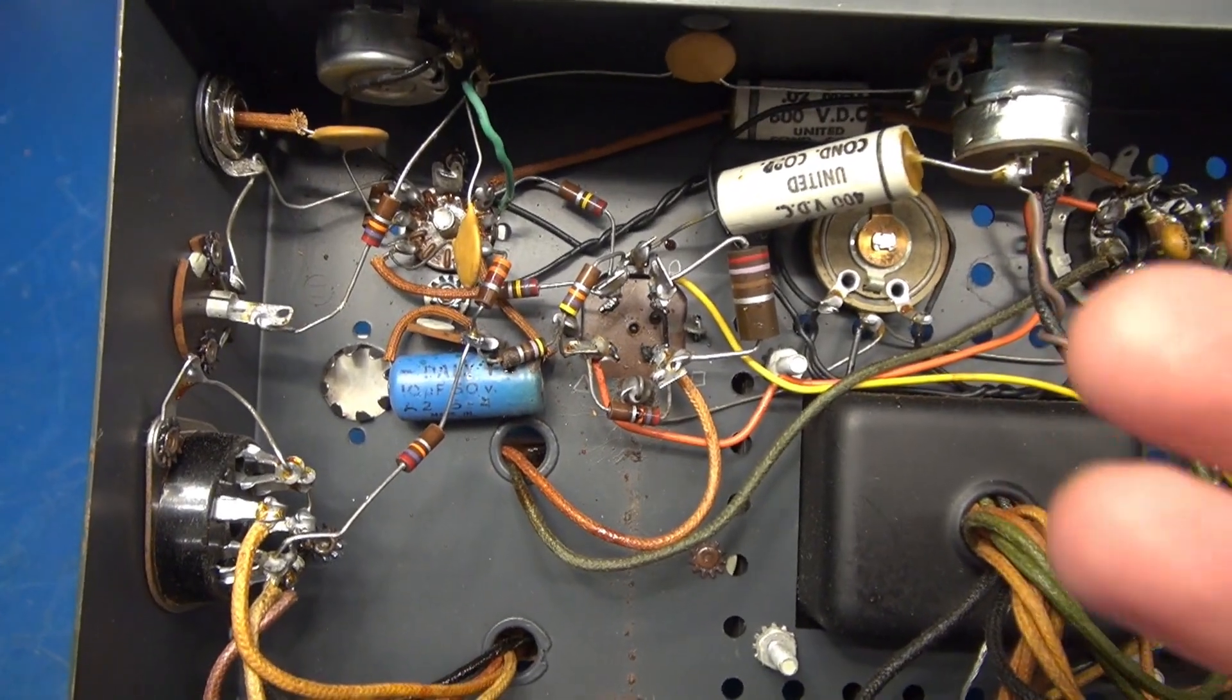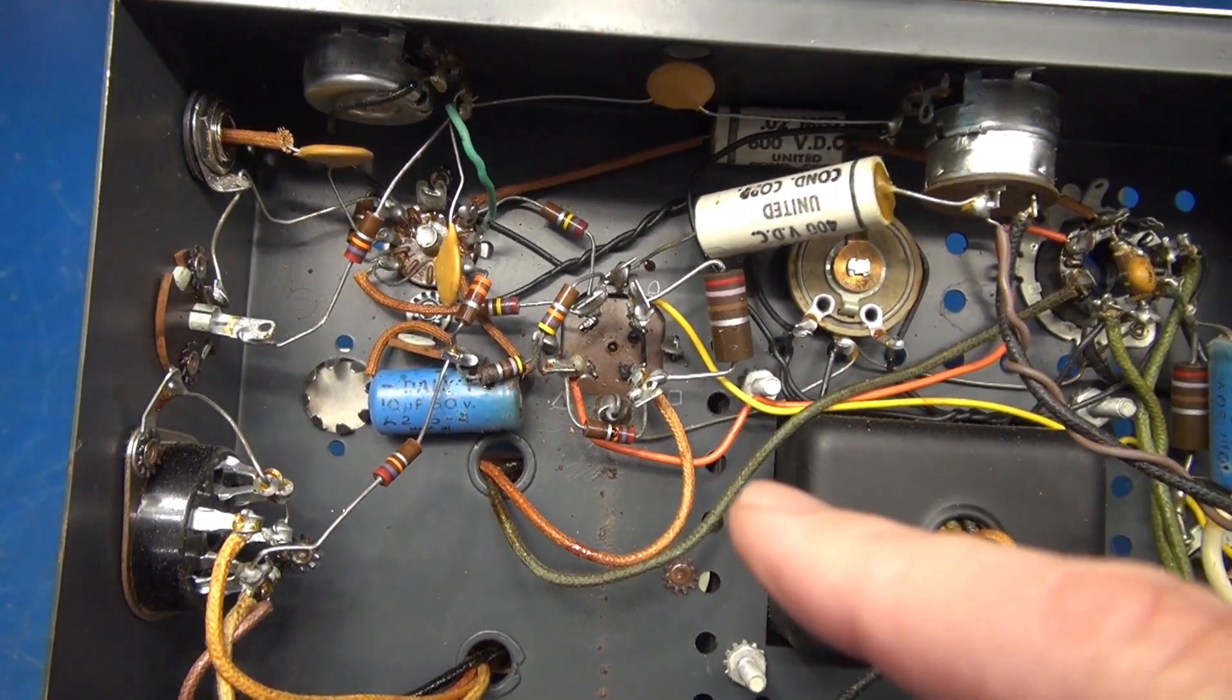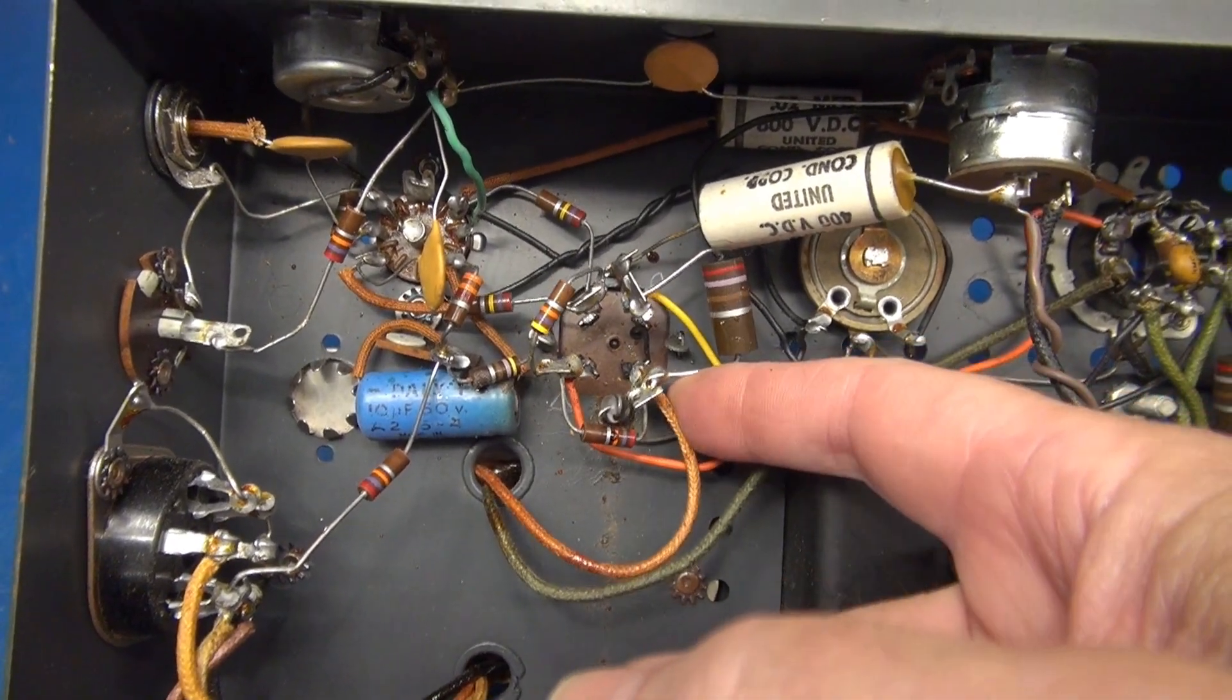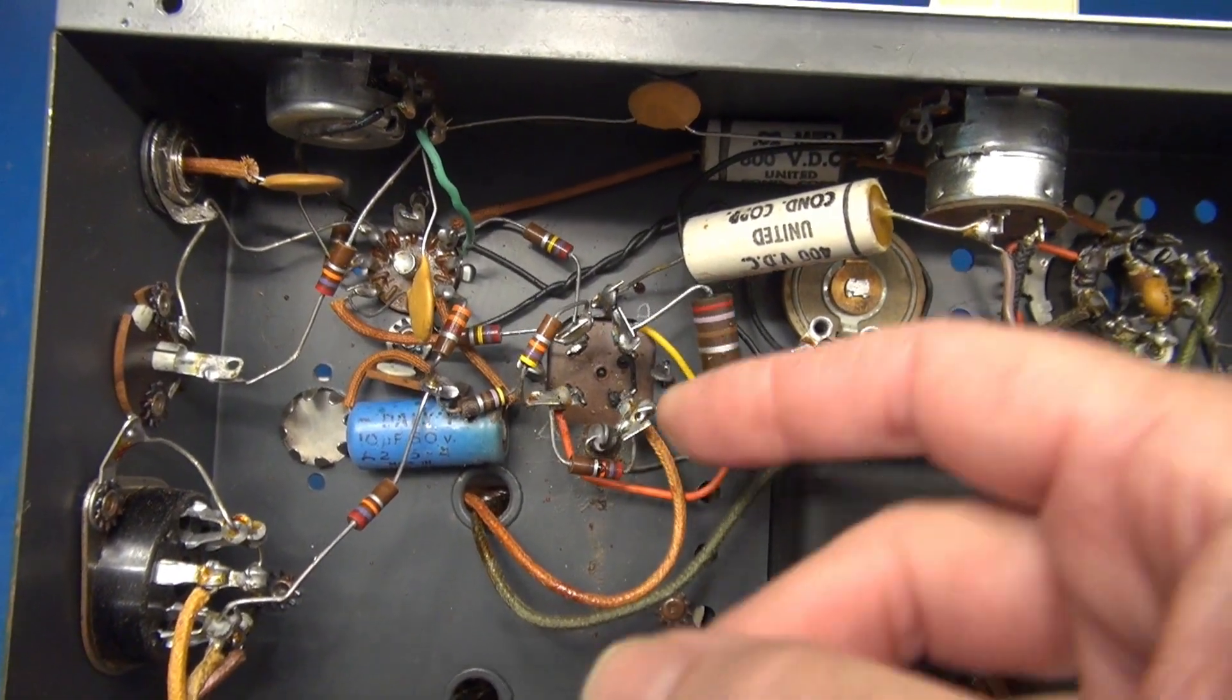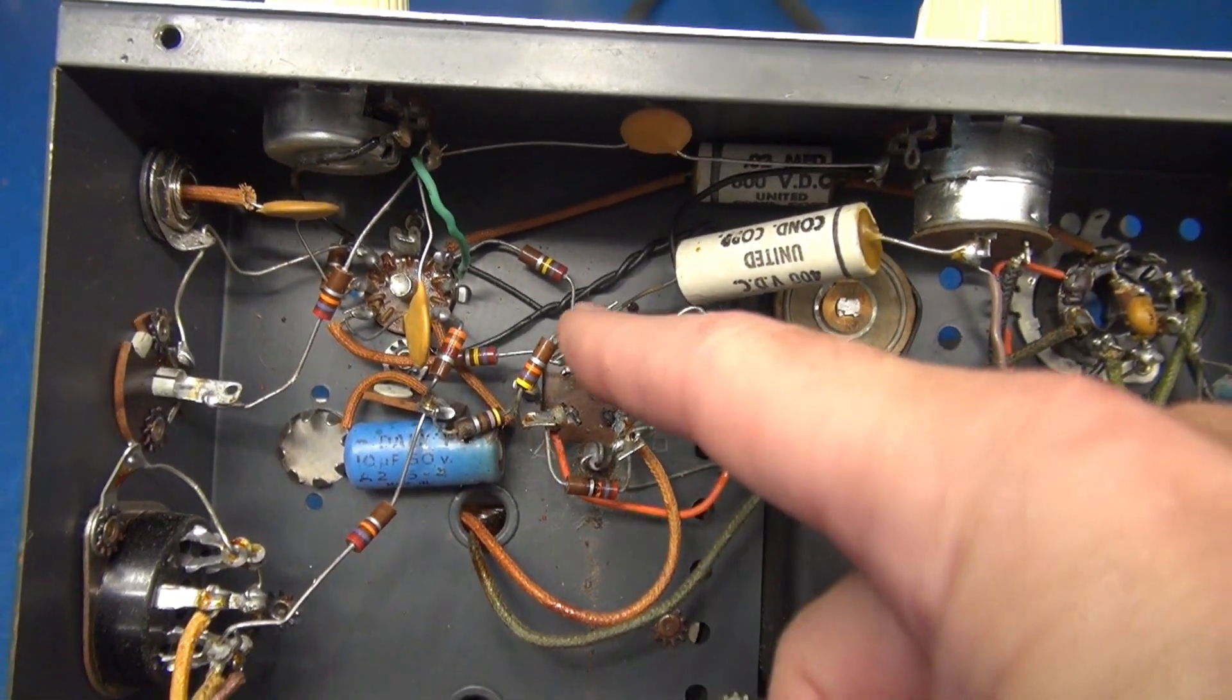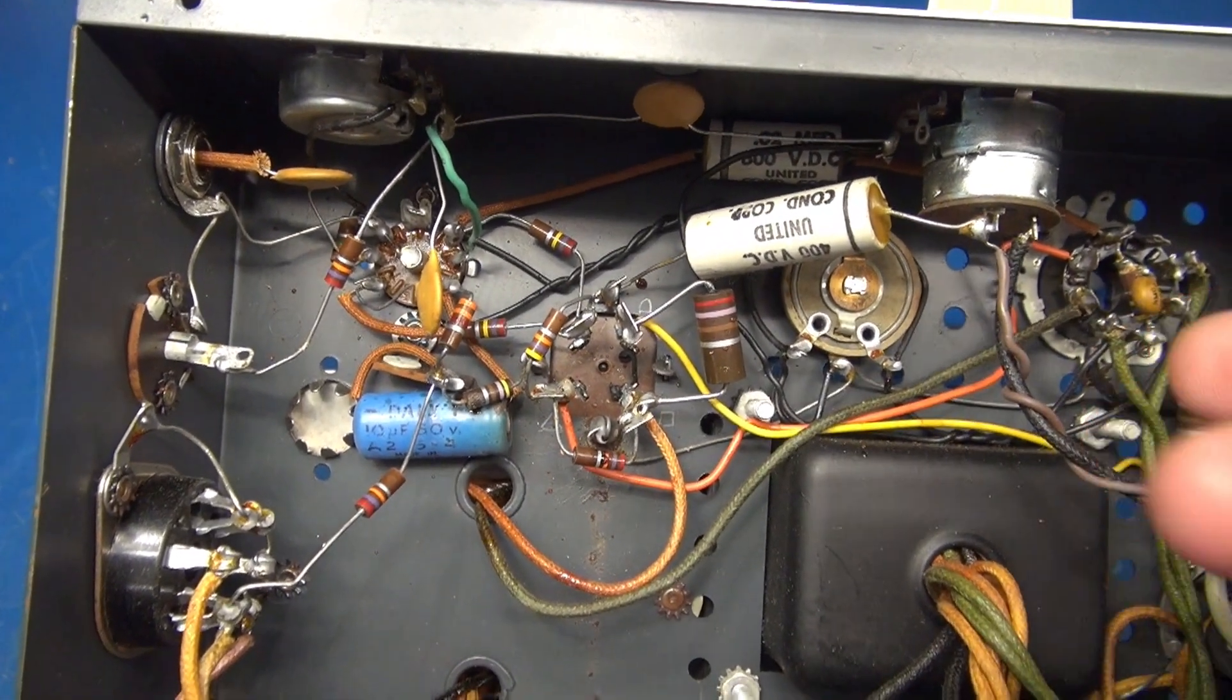So what I do to make changing these multi-section caps out easier, number one, I take a picture of its original configuration. And I cut the terminals right off the cap. So everything's floating in place the way it was. I just need to break the ground tabs, pull out that cap, put in the new one, transfer the component.